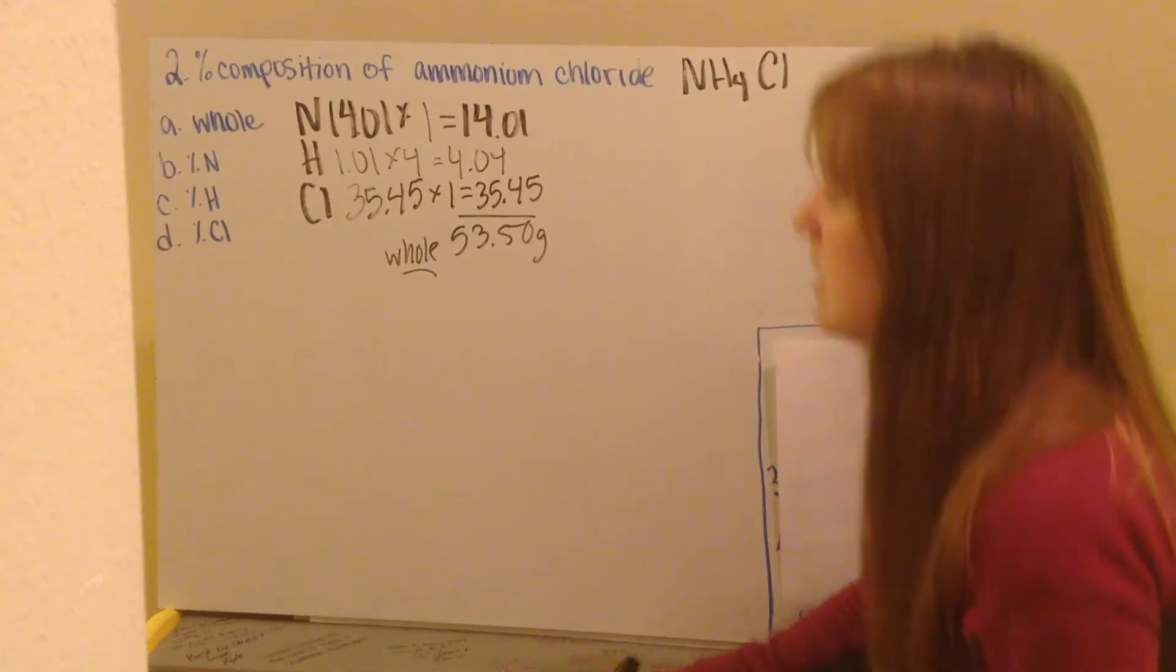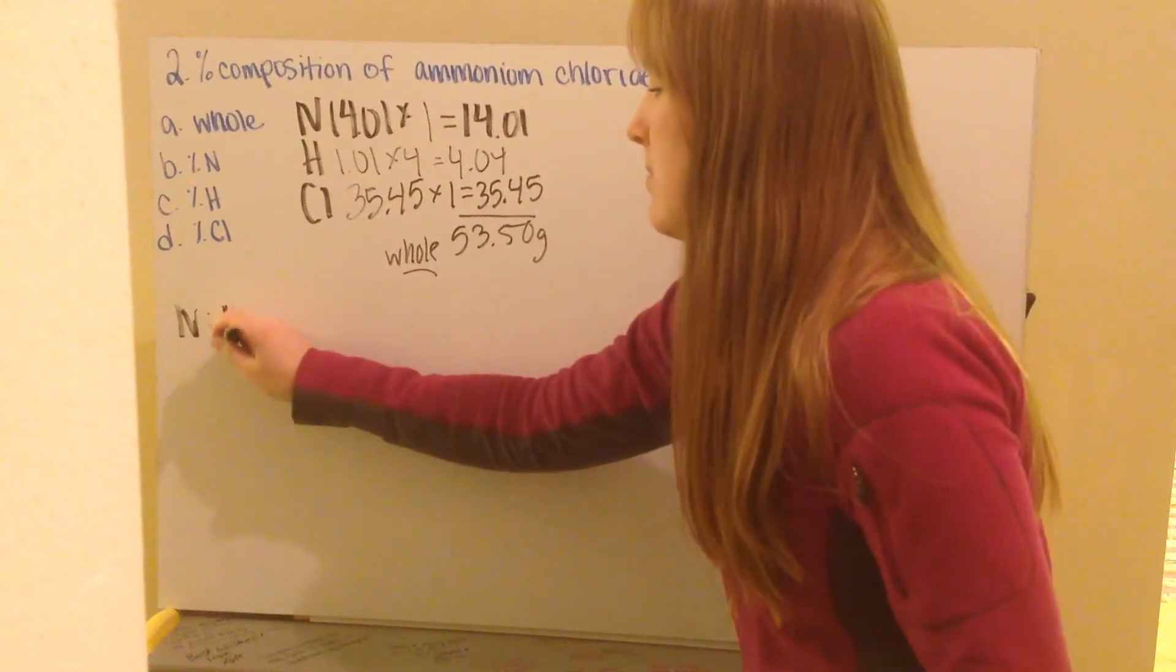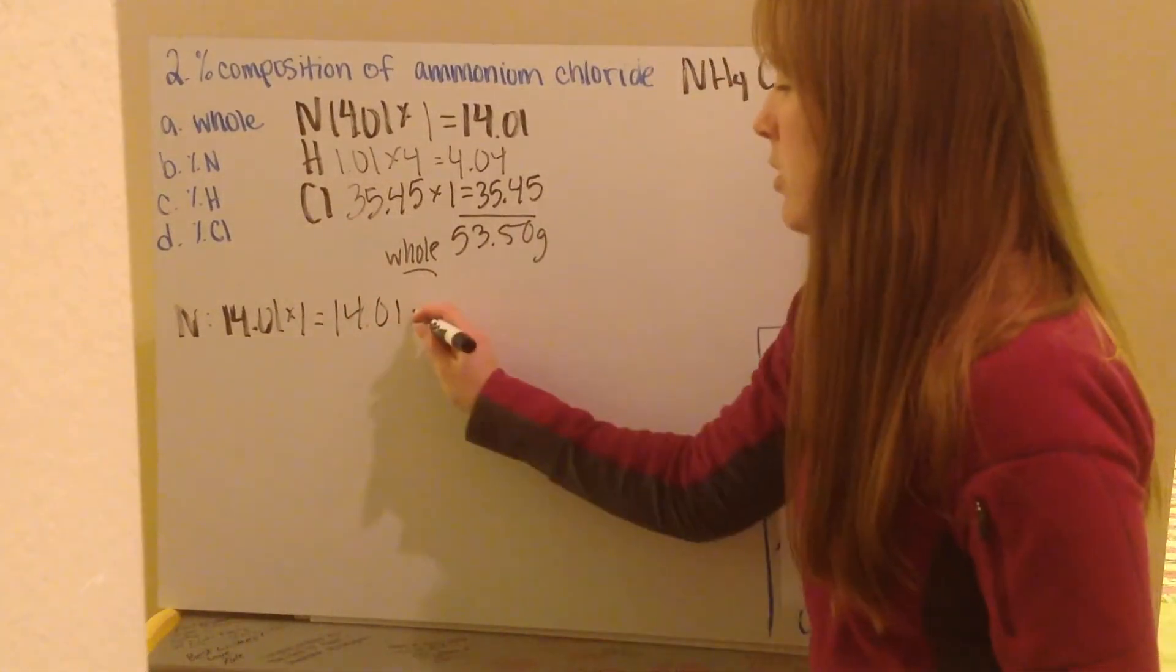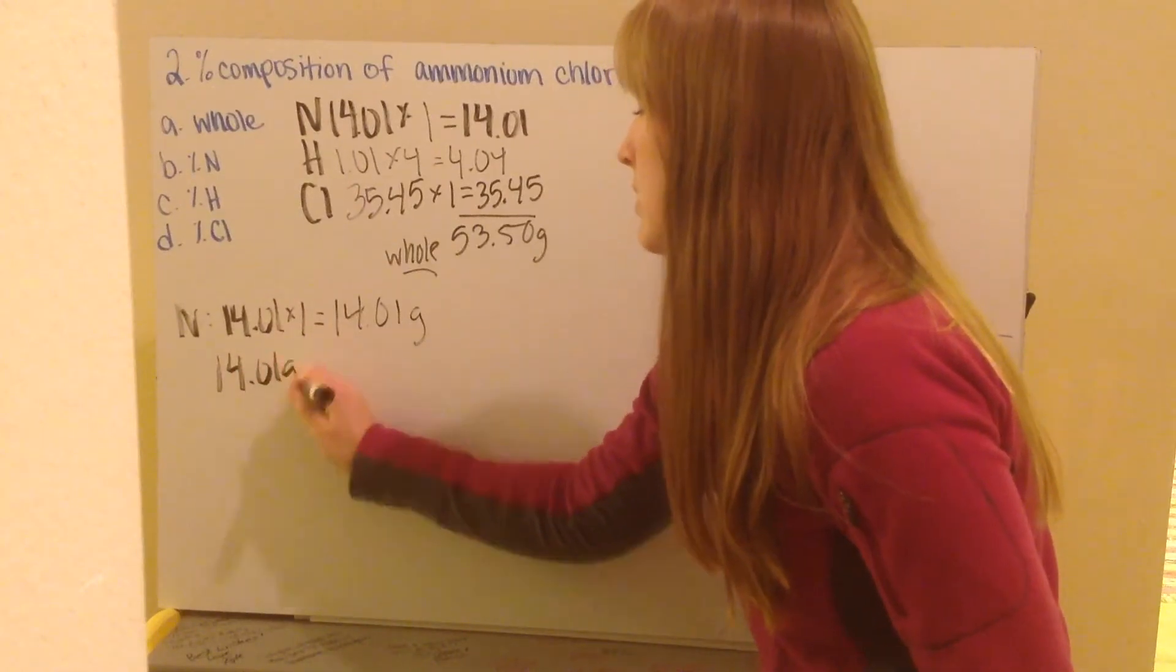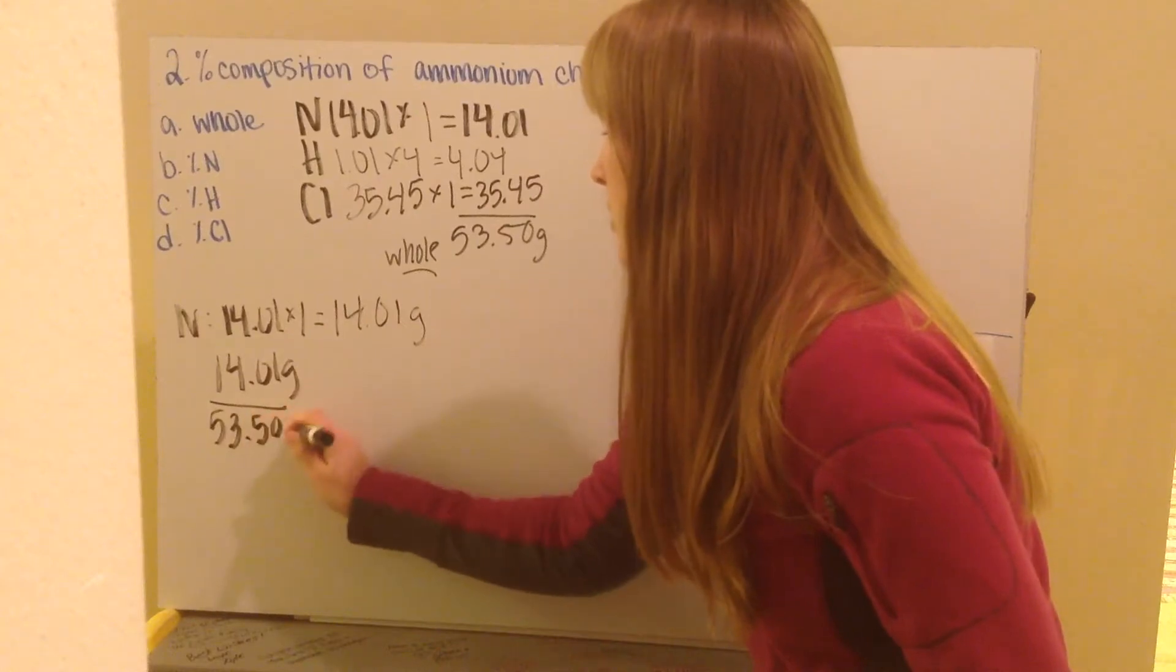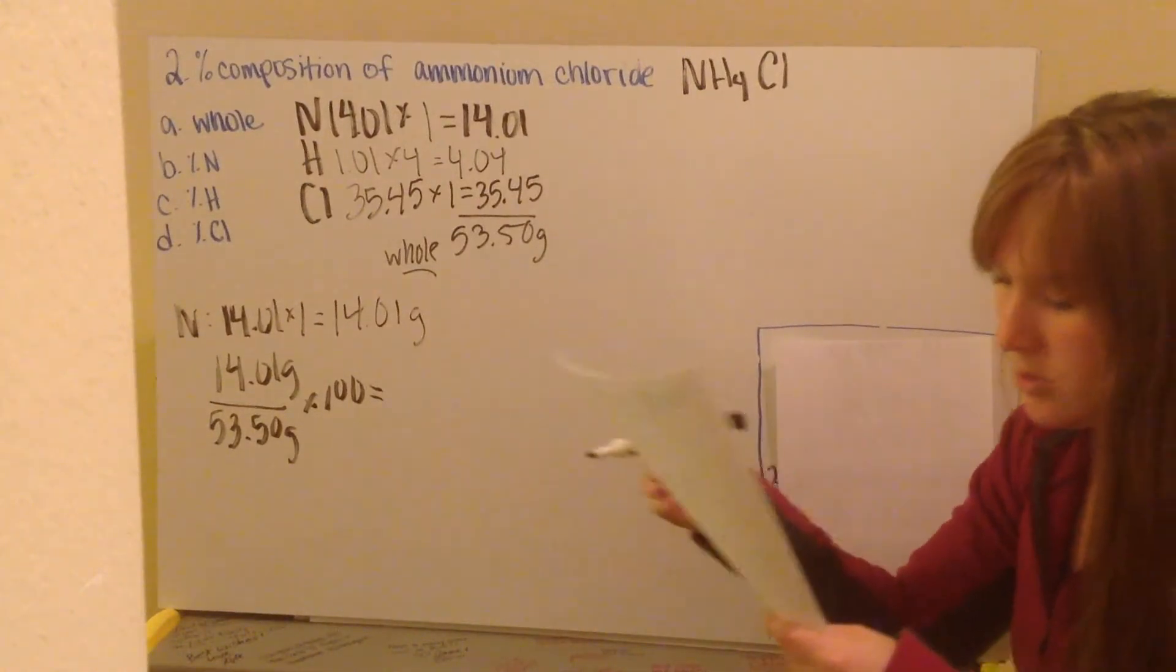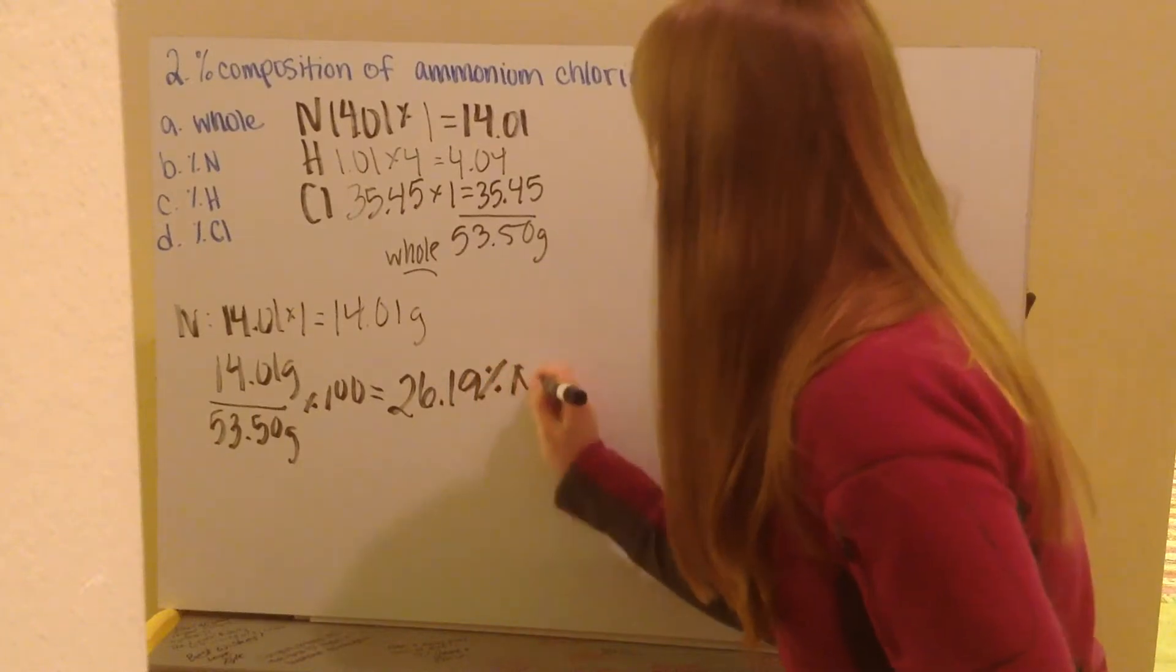On to my nitrogen. Nitrogen I calculated has a mass of 14.01, and I have one nitrogen, which gives me a total mass contribution of my nitrogen of 14.01 grams. I take that 14.01 grams and divide it by my total mass of 53.50 grams times 100, and I get a percent composition for my nitrogen to be 26.19% nitrogen.